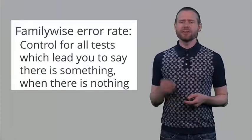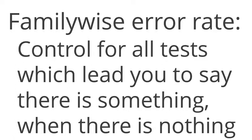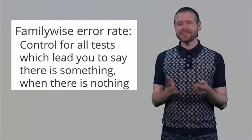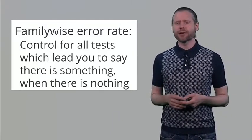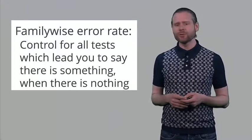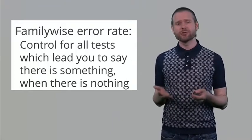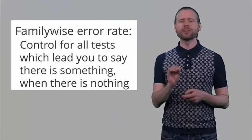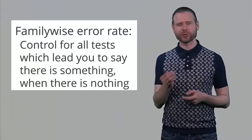We must control not just a single test but what is known as the family-wise error rate — controlling for all tests that could lead you to say there is something when there is nothing. In a 7-test ANOVA situation, the family is 7 tests. However, if you were only interested in interactions, not main effects, you might argue there are only 4 tests you truly care about. That would be your family, and you would divide the alpha level by 4.